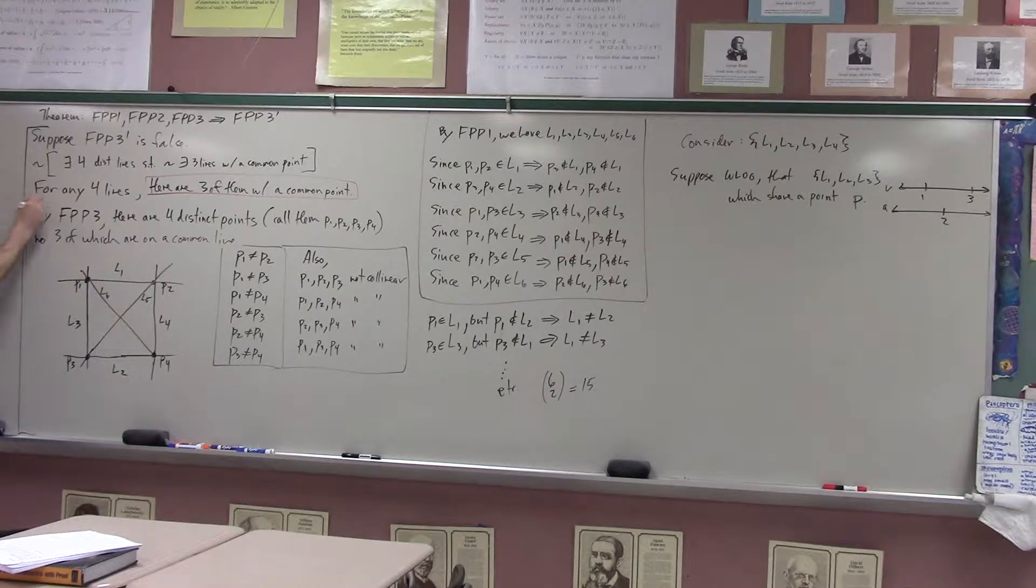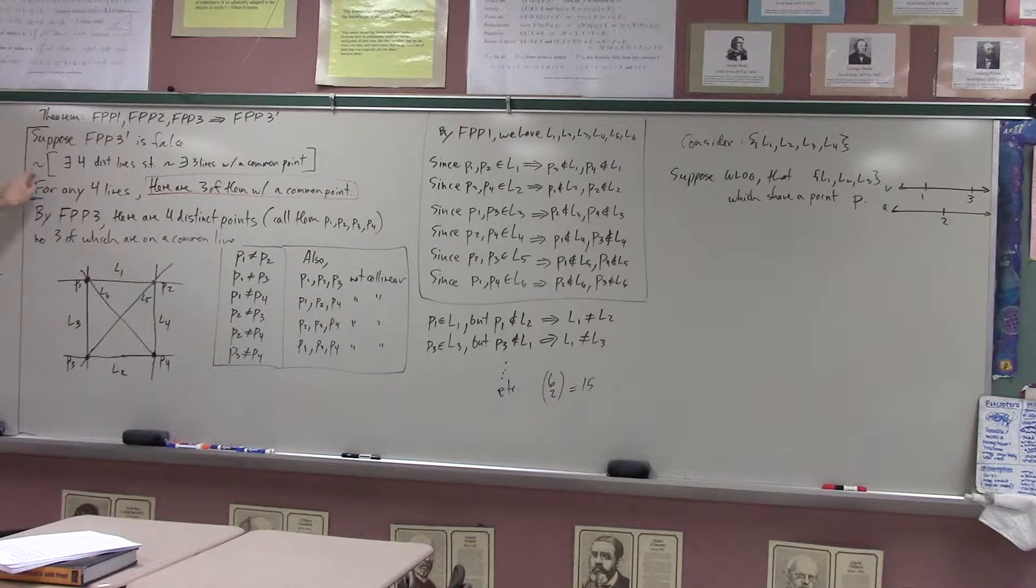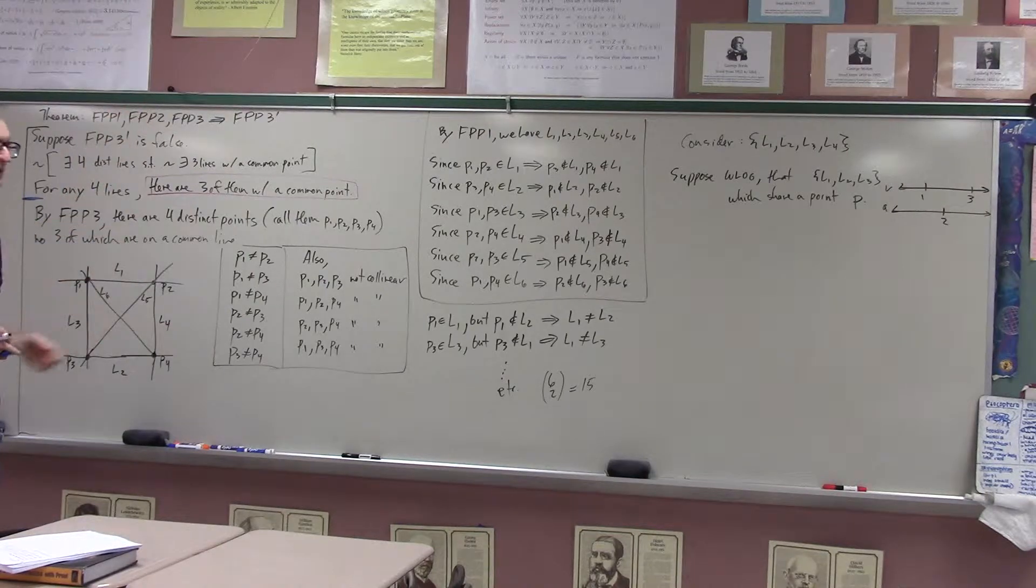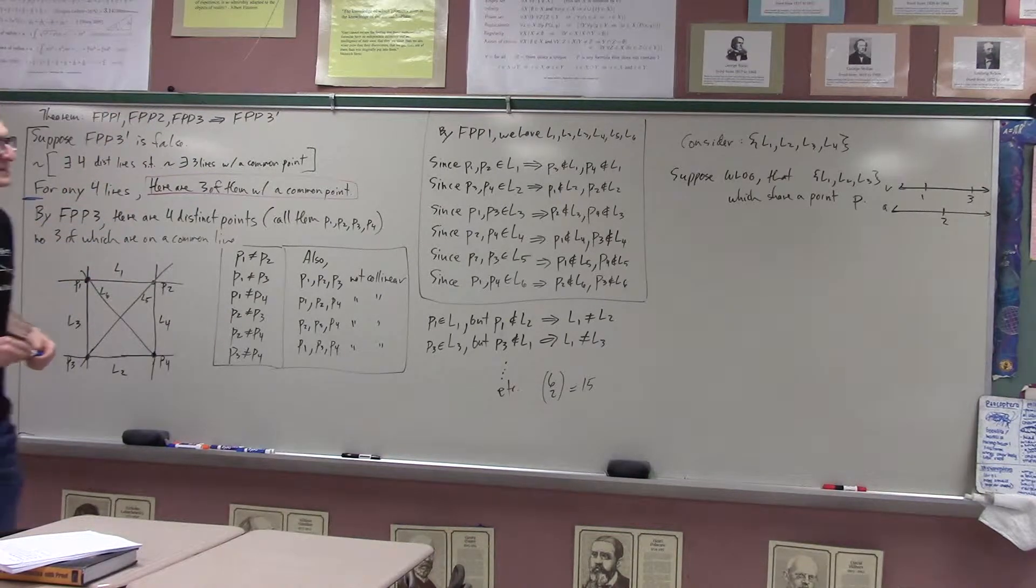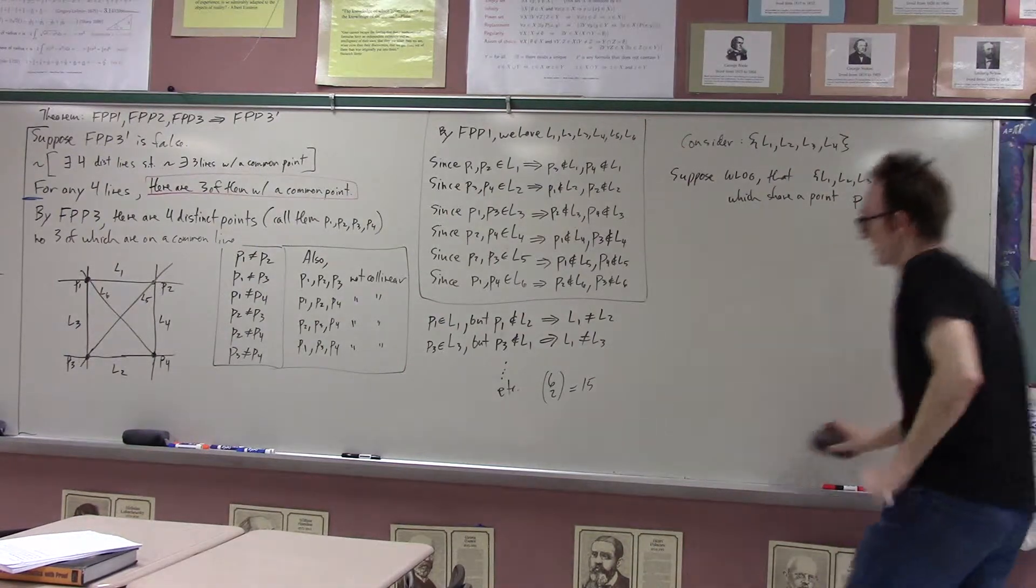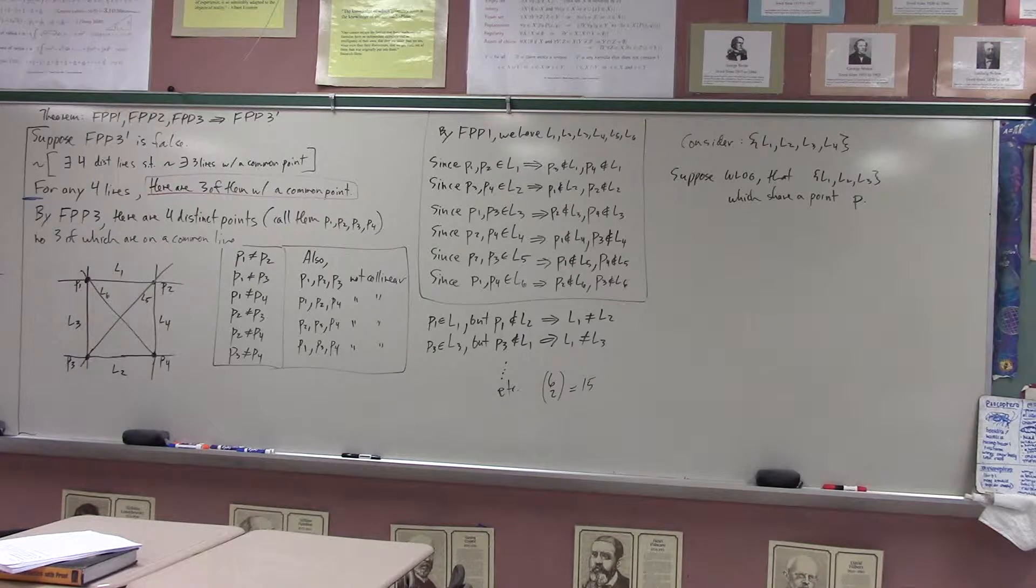Thus, translated more into English by distributing the quantifier through, what we have assumed by assuming the negation of FPP3 prime is that for any four lines whatsoever there must be three of them with a common point. This thing which now has a pink box around it, this is the thing which is going to lead us to contradiction.